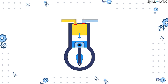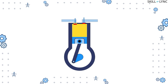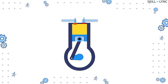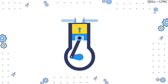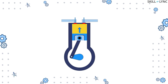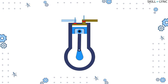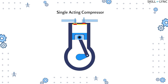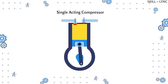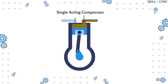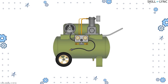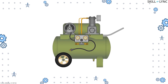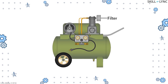Now when the piston moves up, it compresses the air. The increased pressure developed inside the cylinder opens the delivery valve and the compressed air is sent to the storage tank. This simple type of reciprocating compressor is known as a single acting compressor.